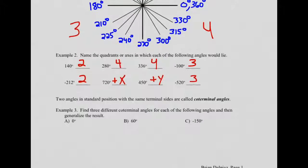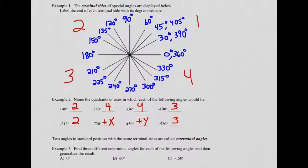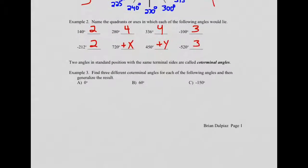Two angles in standard position with the same terminal sides are called coterminal angles, which I've talked about above. For example: 0 and 360 are coterminal, 30 and 390, 45 and 405, 330 and negative 30, and so on.